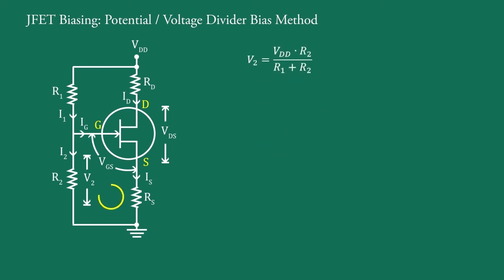Now, applying Kirchhoff's voltage law to this loop, V2 equal to VGS plus IDRS and therefore VGS equal to V2 minus IDRS.